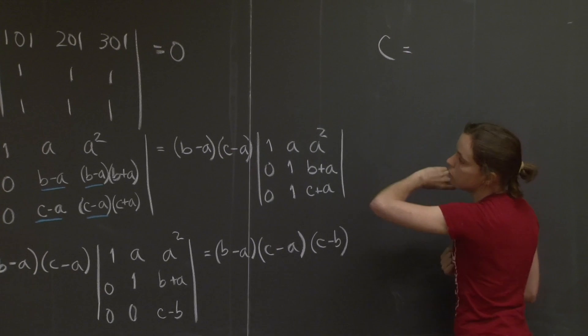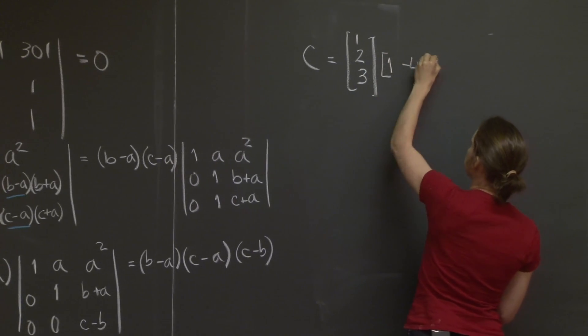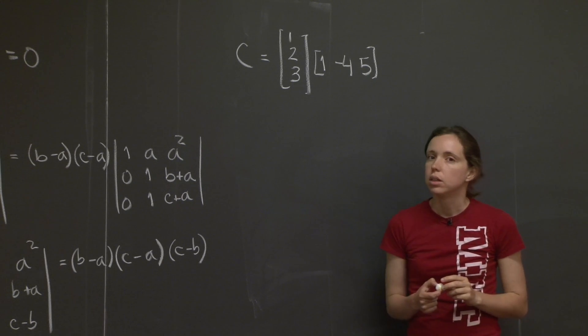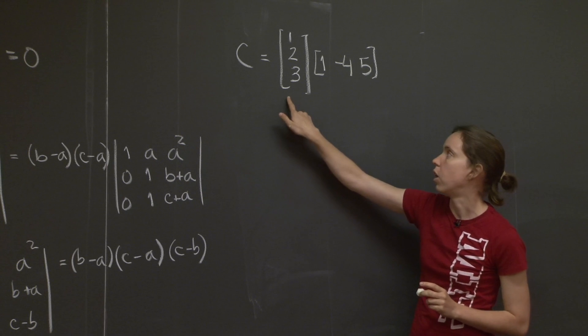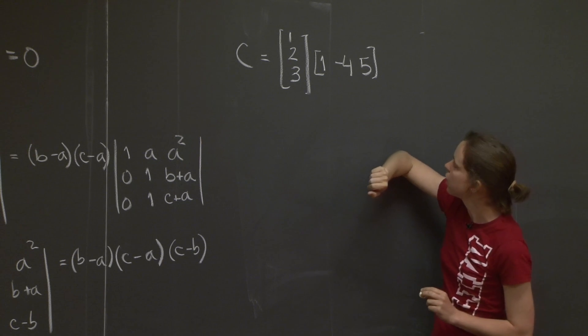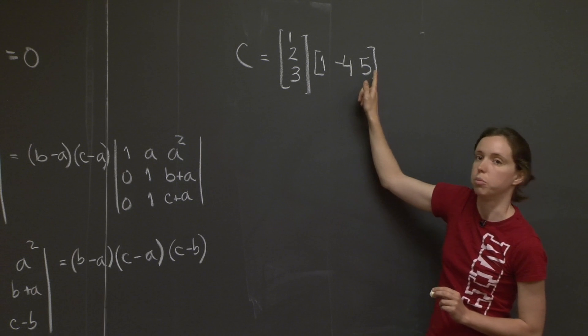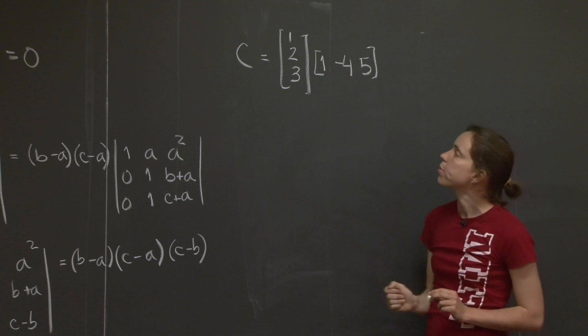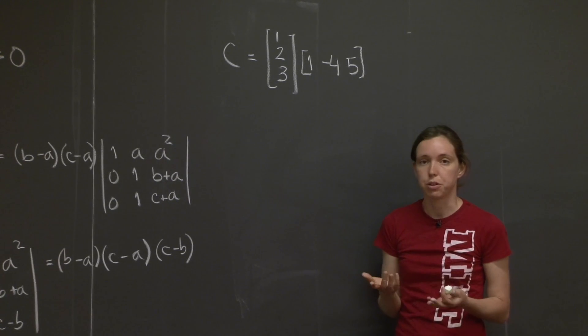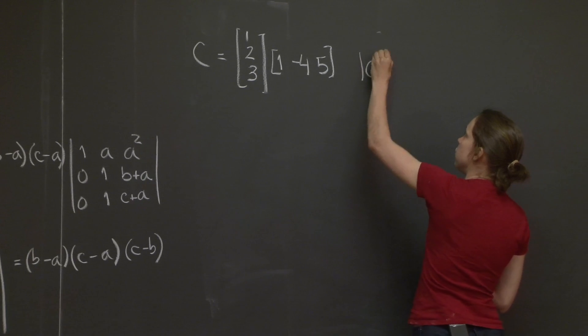On to matrix number 3, C equals 1, 2, 3 times 1, minus 4, 5. How did you get the determinant for this one? Well, remember this is a rank 1 matrix because it's a column vector times a row vector. So if you write out what the matrix is, it will be a 3 by 3 matrix. The first row will be 1 times 1 minus 4, 5. The second row will be 2 times those numbers, and the third row will be 3 times those numbers. So all the rows are going to be linearly dependent, or another way of saying, the matrix is singular. When the matrix is singular, the determinant is always equal to 0.